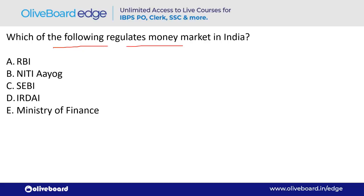Which organization regulates the money market in India? The answer is the Reserve Bank of India — option A. Money market is a short-term market regulated by RBI; capital market is long-term and regulated by SEBI — Securities and Exchange Board of India.